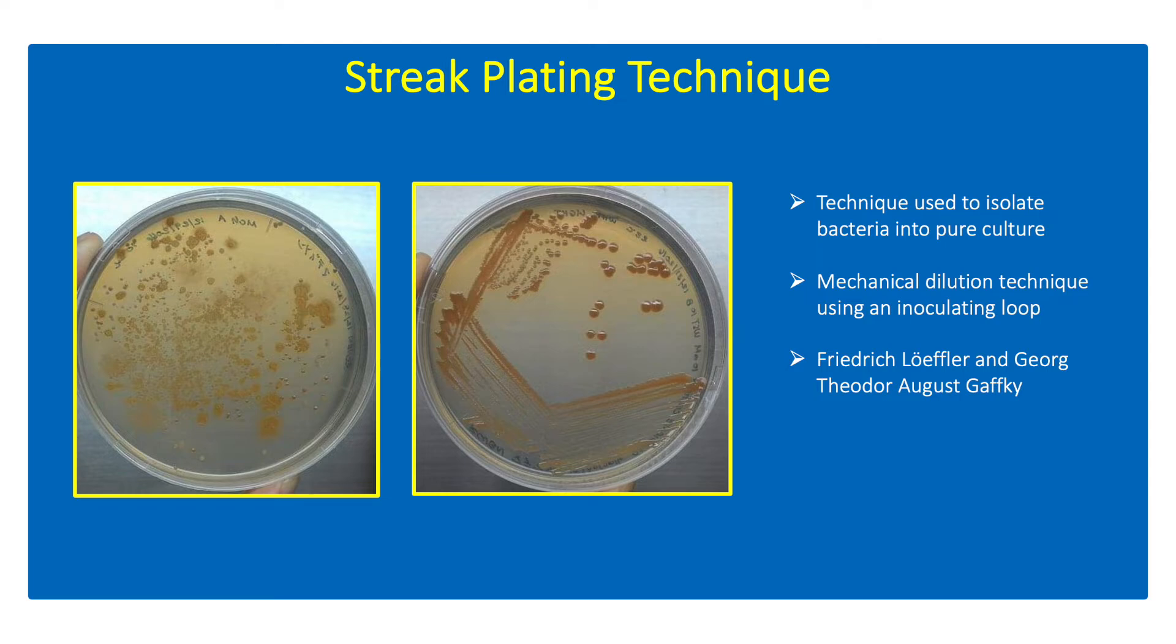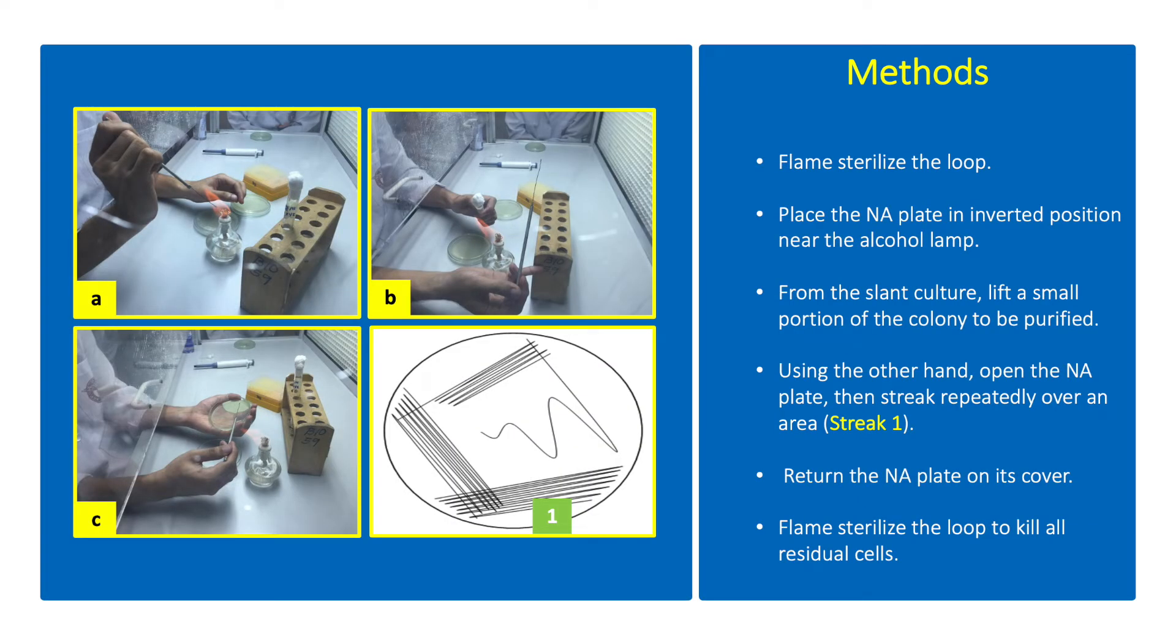The materials include bacterial culture in NA slants, pre-poured NA plates, alcohol lamp or Bunsen burner, inoculating loop, and 70% ethanol. Observe aseptic techniques when using microbial cultures.